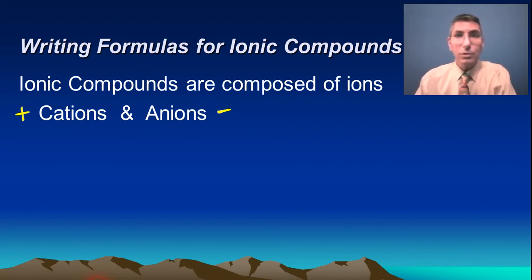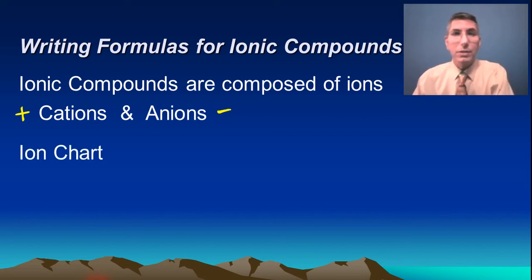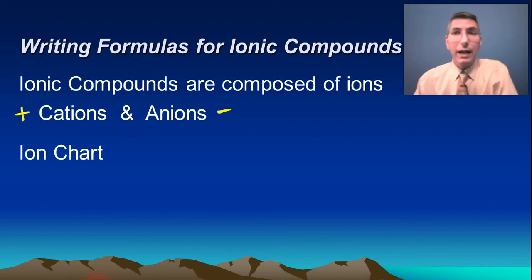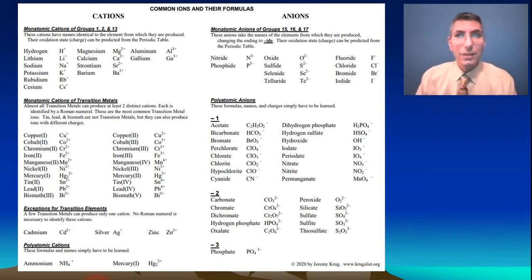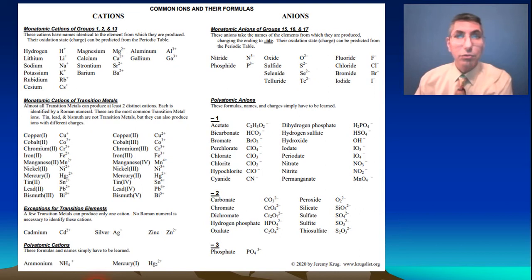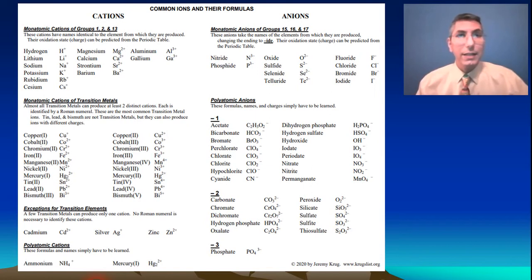In most chemistry classes you're probably going to have access to an ion chart — something like this one I use, a chart of the most common ions and their formulas for a first year chemistry class. If you'd like a copy, I'm going to put a link in the description of this video so you can download it and use it to follow along.